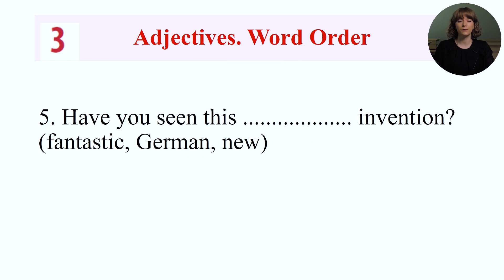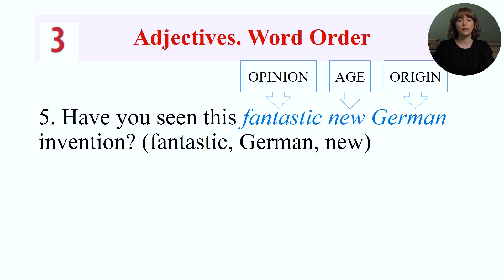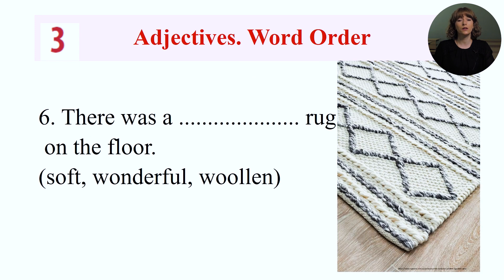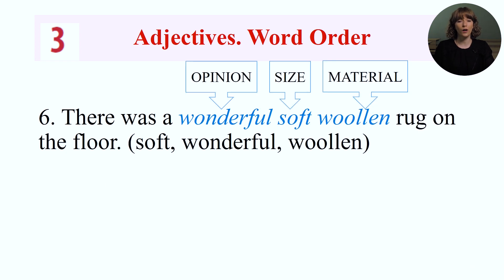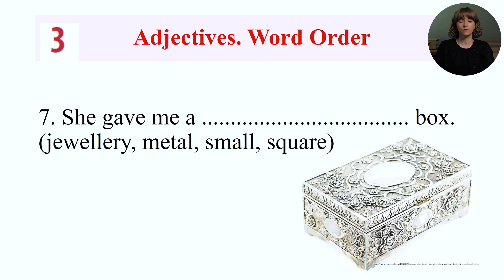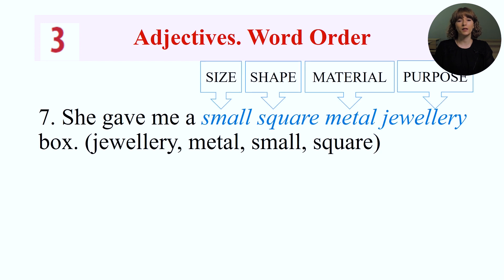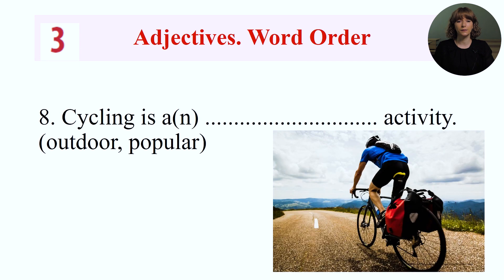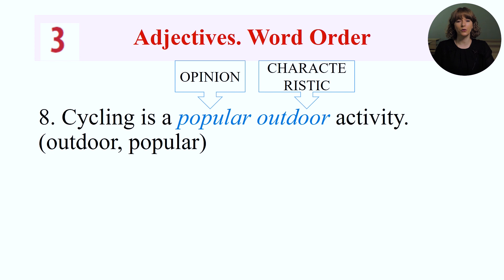What about this sentence? 'Have you seen this fantastic new German invention?' What is the right order here? 'There was a wonderful soft woolen rug on the floor.' 'She gave me a small square metal jewelry box.' Do you like cycling? 'Cycling is a popular outdoor activity.'